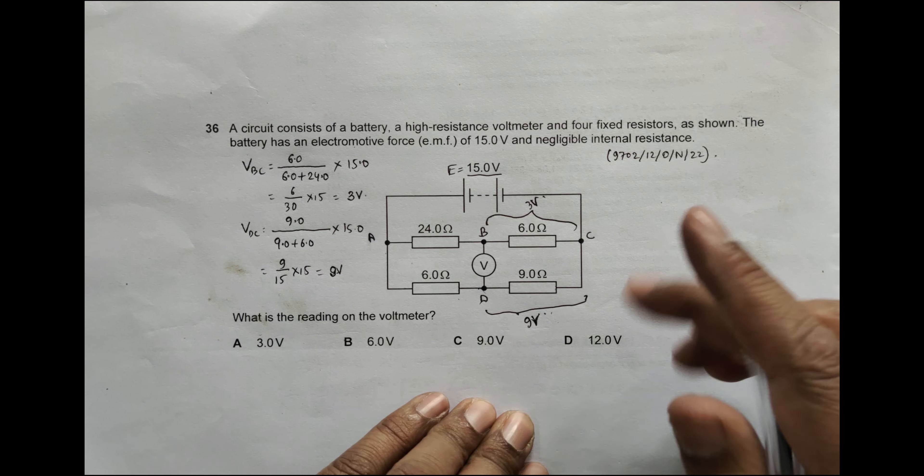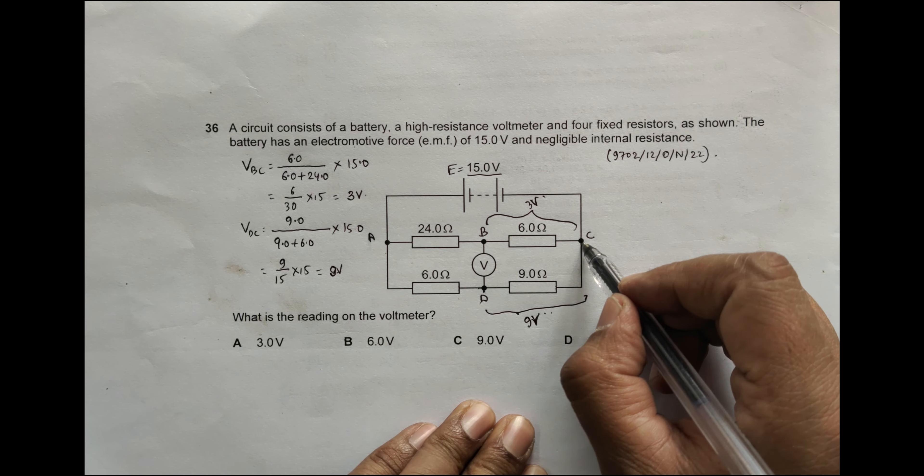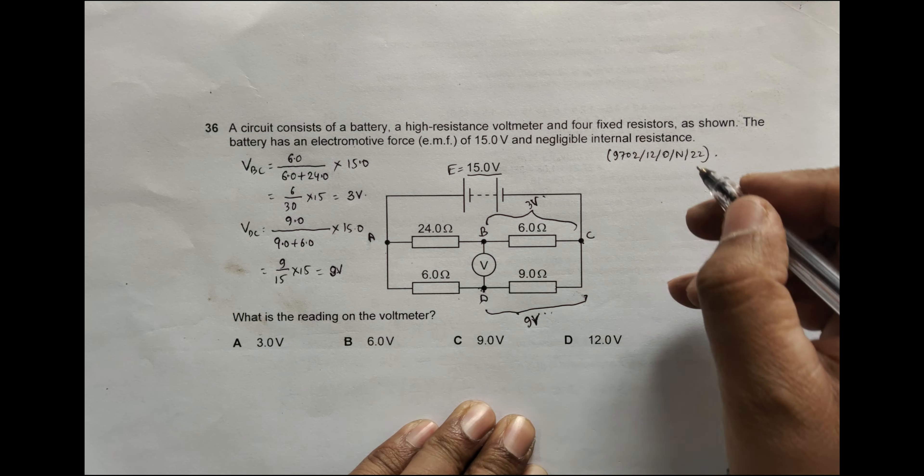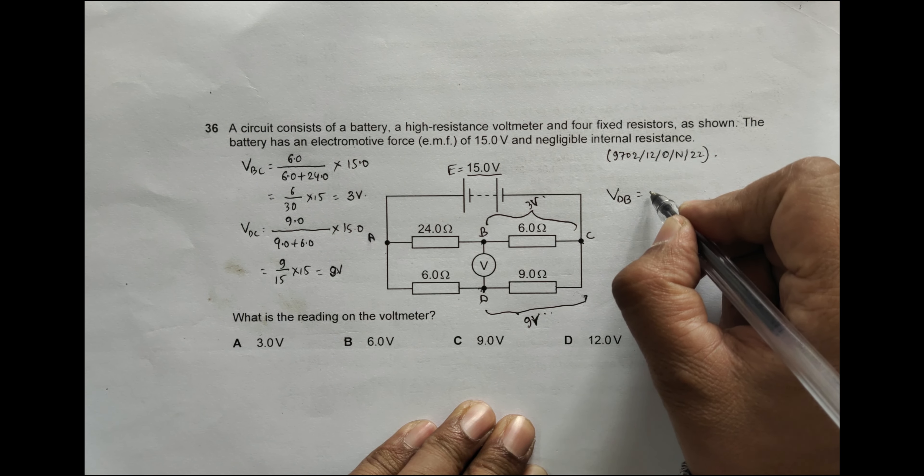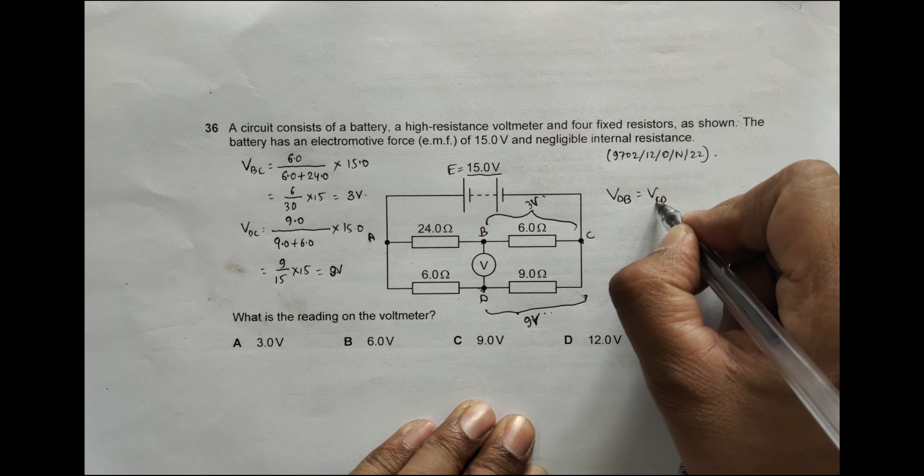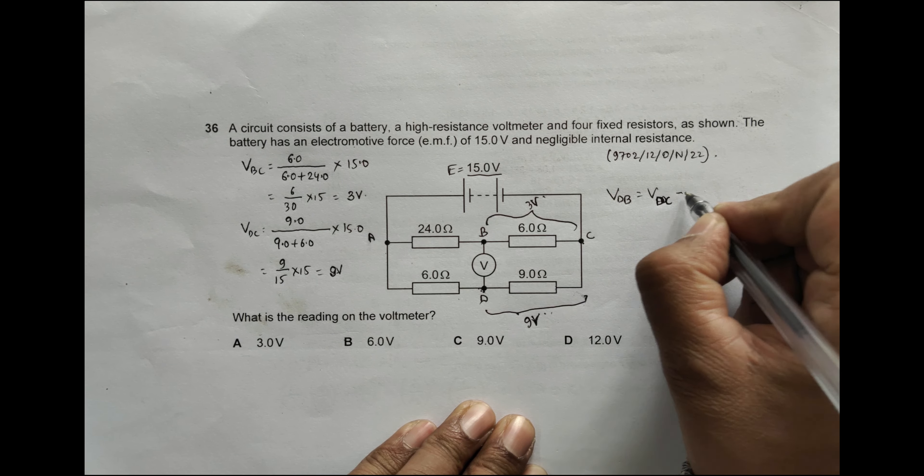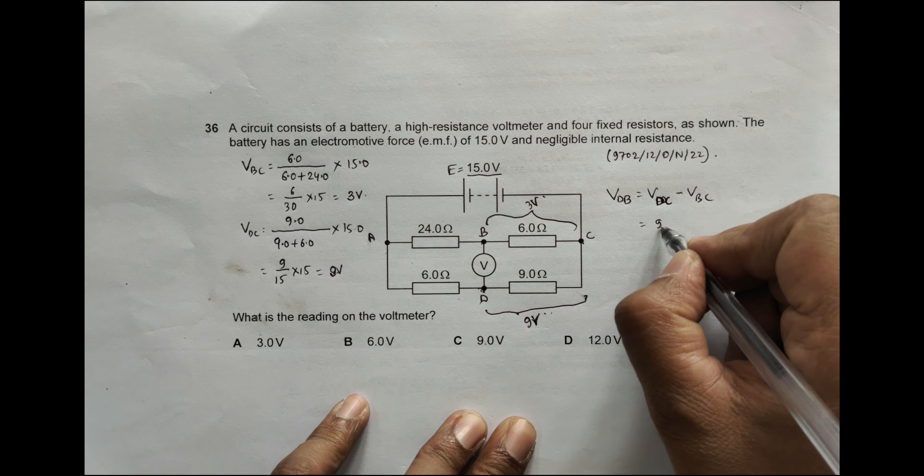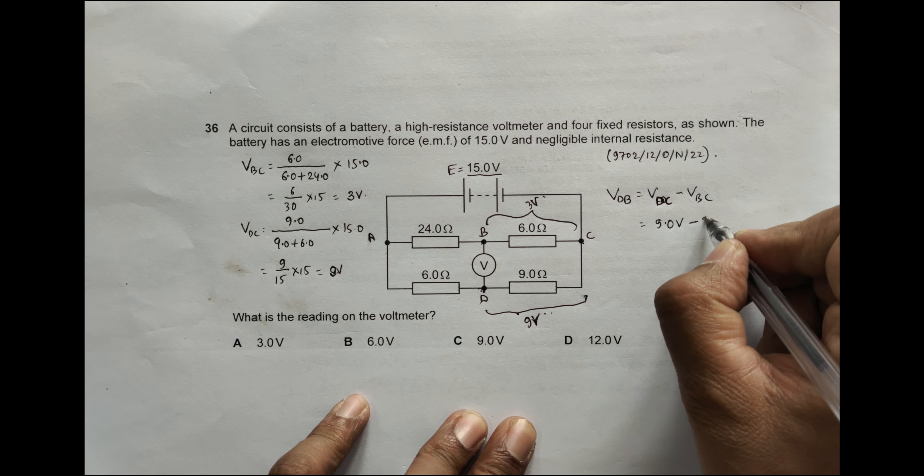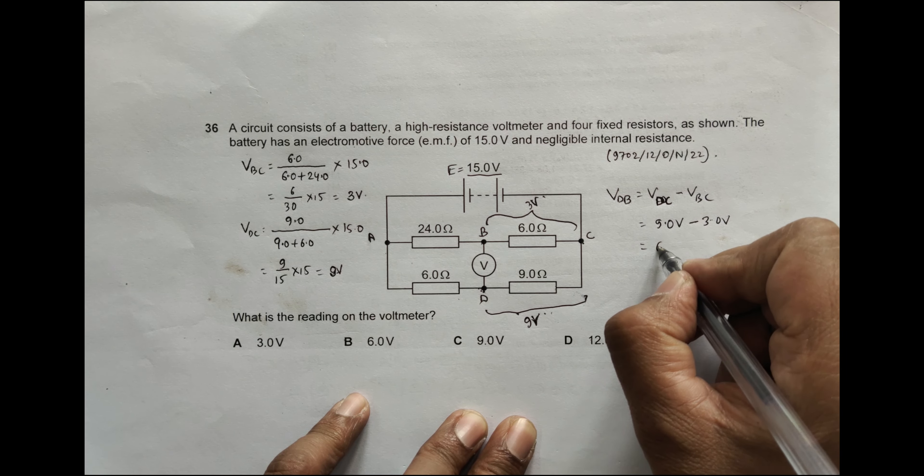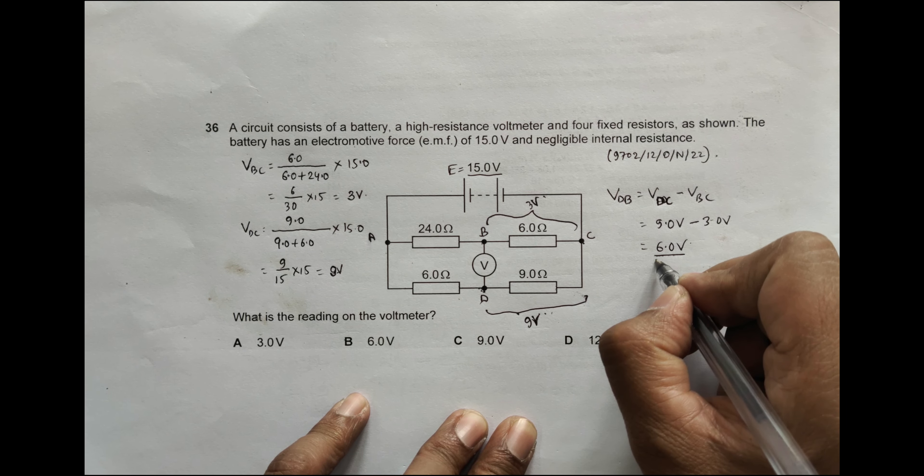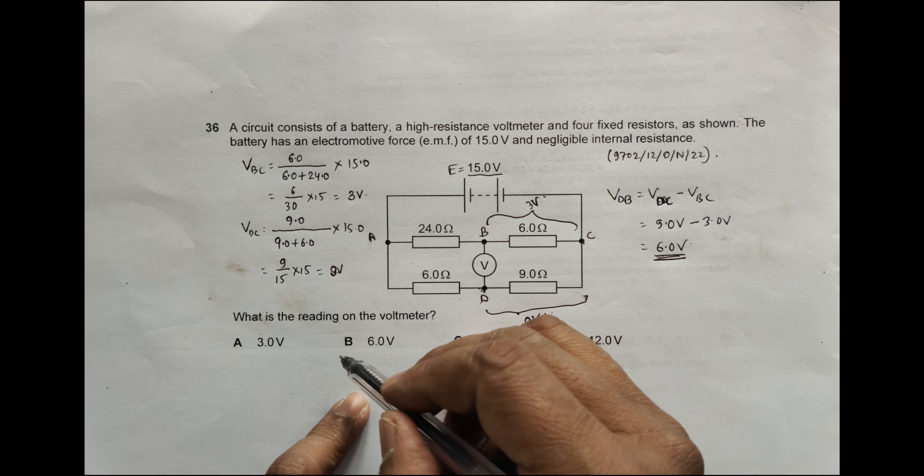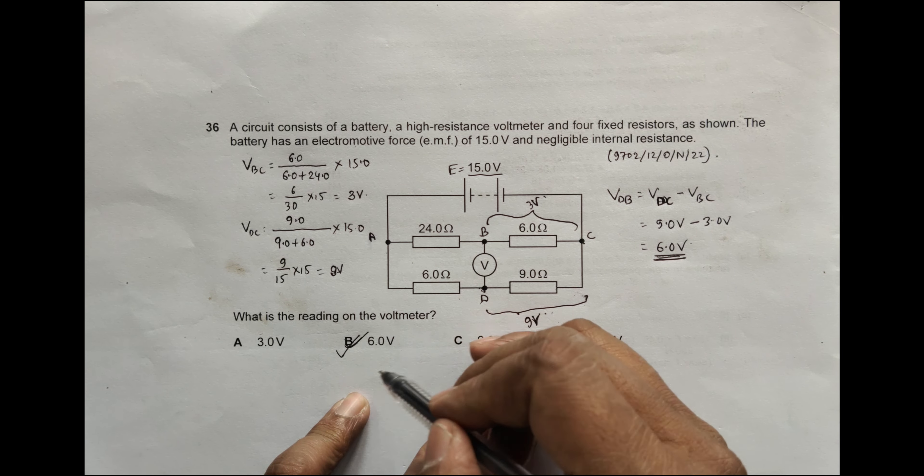Now if this point is at 9 volts compared to this, and if it is at 3 volts compared to this, the potential difference here should be VDB equals VDC minus VBC. VDB should be equal to 9.0 volts minus 3.0 volts, equal to 6.0 volts. So VDB is equal to 6.0 volts, so the answer should be choice number B.